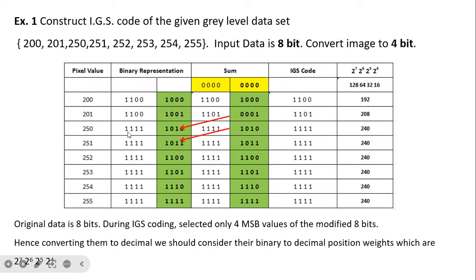For the third example pixel, the MSBs are 1111. Since there are four ones, there is a chance of overflow when adding the previous LSBs. In this case, we do not add the previous 4 LSBs — we keep the number as it is. Only when this all-ones condition is not present do we add the previous 4 LSBs. In this way, the IGS code is created, representing each pixel in 4 bits.